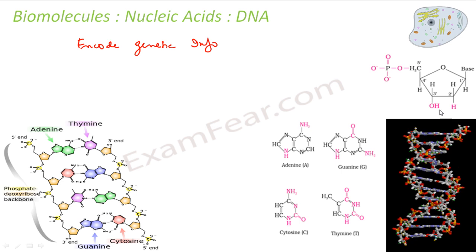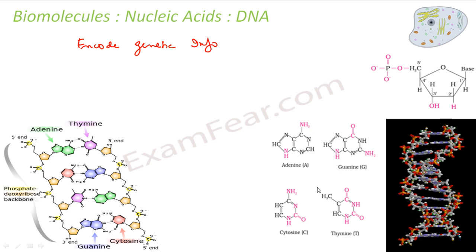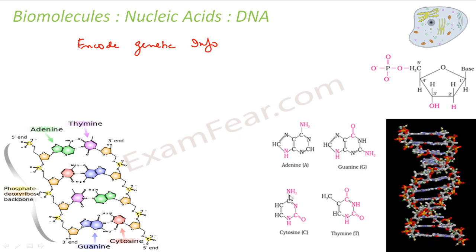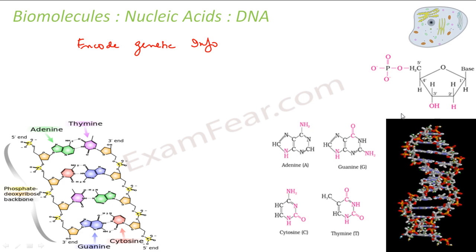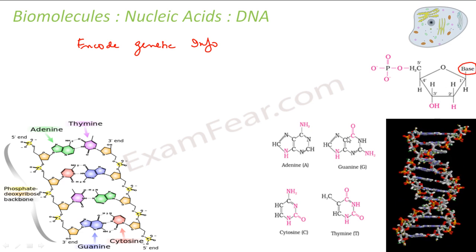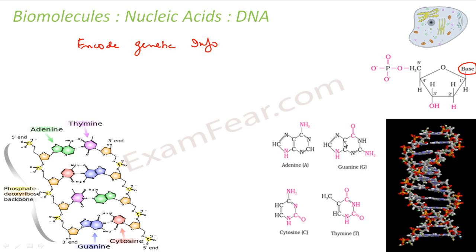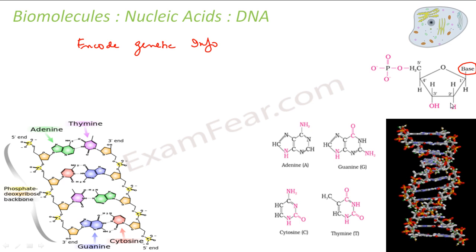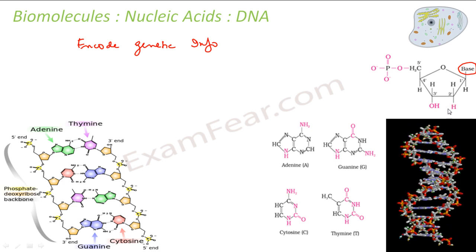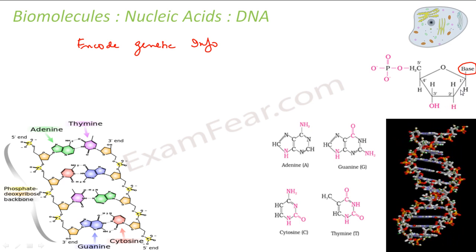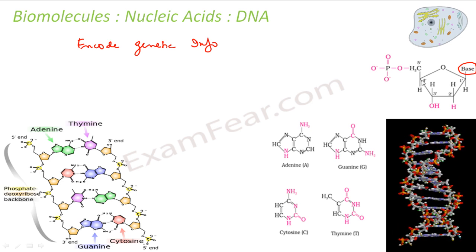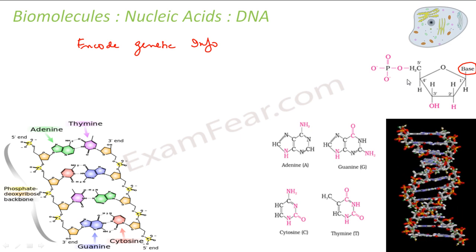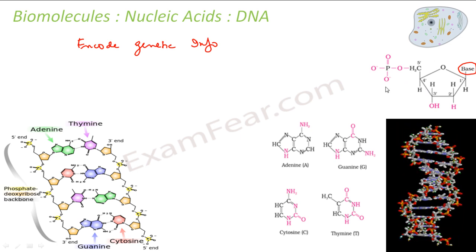Each nucleotide is composed of a nuclear base. For DNA, we have four nuclear bases. There is a base linked to nucleotides and a backbone of alternating sugar — this is the deoxyribose — and a phosphate group. That is my nucleotide. There will be four different nucleotides.